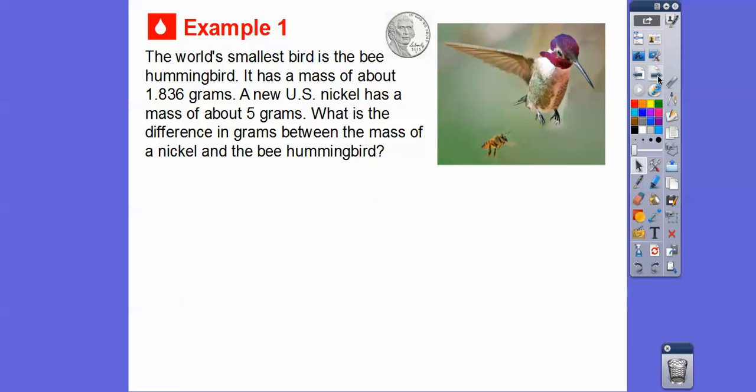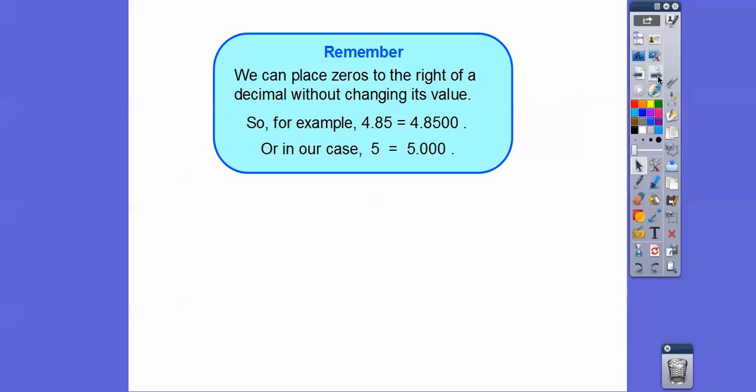So the world's smallest bird is called the bee hummingbird. You guys have probably seen some sucking some nectar out of flowers or some juice out of your hummingbird feeders. So it has a mass of about 1.836 grams. A new U.S. nickel has a mass of about 5 grams. So what is the difference? We're going to subtract the difference in grams between the mass of the nickel and the bee hummingbird. So we're going to subtract 5 minus 1.836.